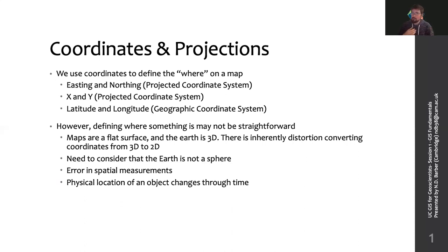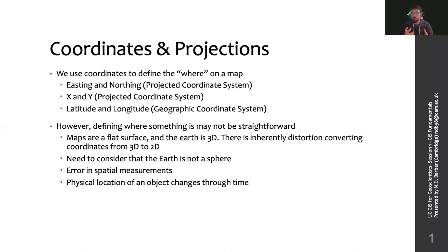This becomes even more complicated when we consider that the Earth isn't actually a sphere. So it's not just as simple as taking a spherical orange and flattening the skin. You're taking a much more mathematically complex object — an oblate spheroid, or a geoid as we understand today — defining the shape of the Earth, and then converting that for two dimensions. That makes the math and the computational processing even more tricky.